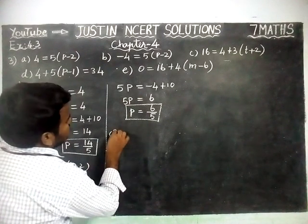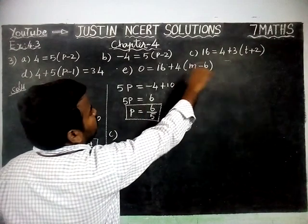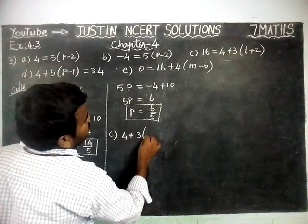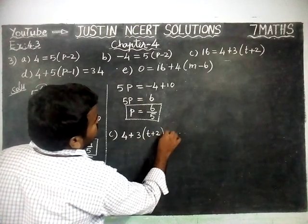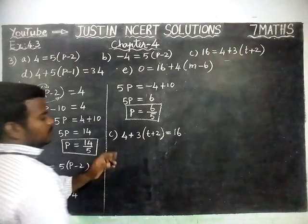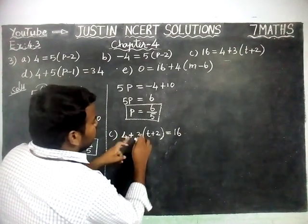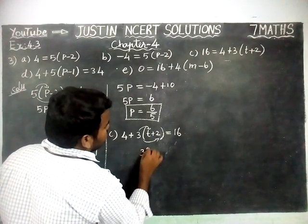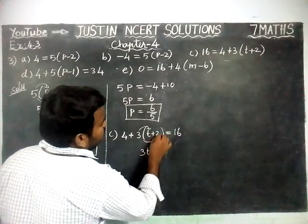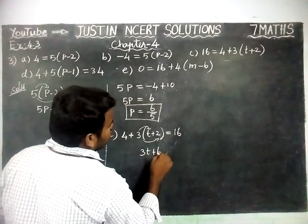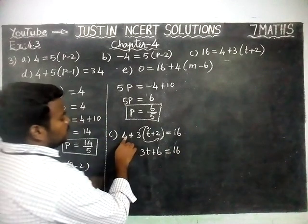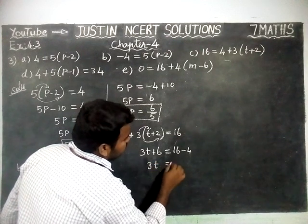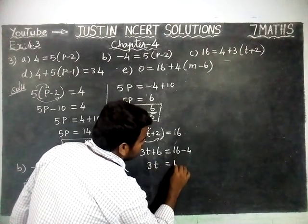Part C: We are going to interchange the places. 4 plus 3 within bracket, T plus 2, is equal to 16. We are going to take this plus 4 to the right hand side and multiply this 3 inside in one step. 3 into T equals 3T, plus 3 into 2 equals 6. So 3T plus 6 equals 16. This plus 4 is going to the right hand side, so minus 4. Now 3T is equal to 16 minus 4, which equals 12.